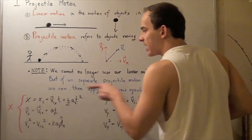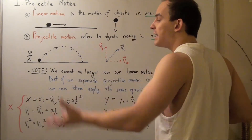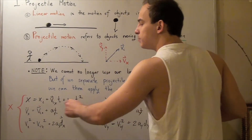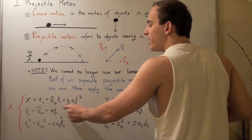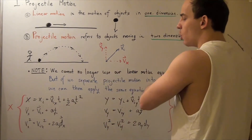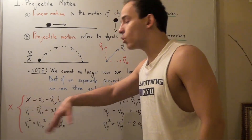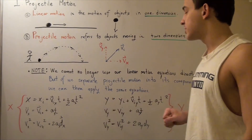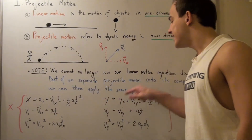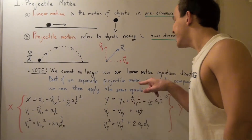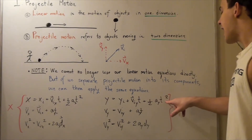For example, the displacement in the x-direction, in the horizontal direction, is given by the following formula: the position at the final point equals the position at the initial point in the x-direction, plus our initial velocity in the x-direction times time, plus one-half times acceleration in the x-direction times time squared. Likewise, we can find an analogous displacement in the y-direction: the final position in y equals the initial position in y, plus the initial velocity in y, plus one-half the acceleration in y times time squared.